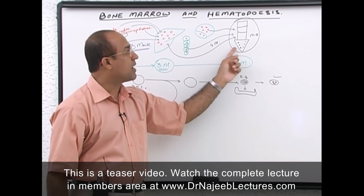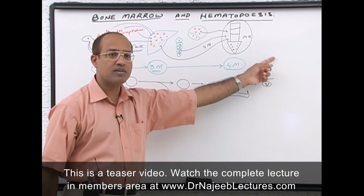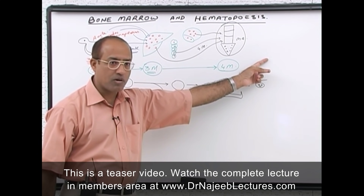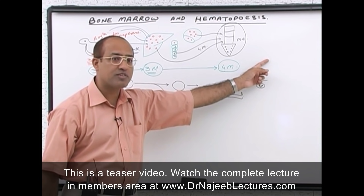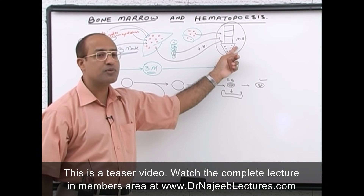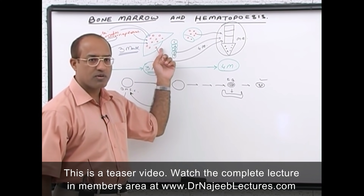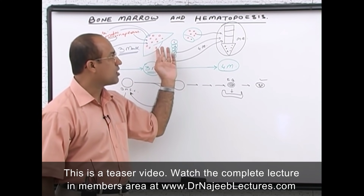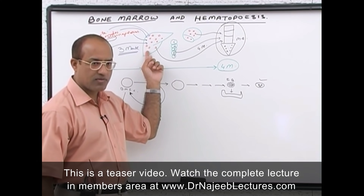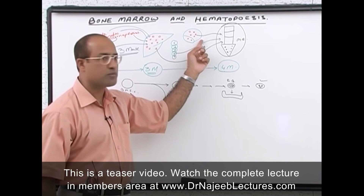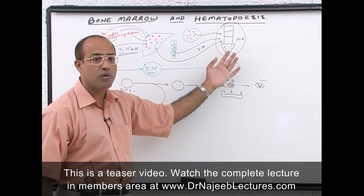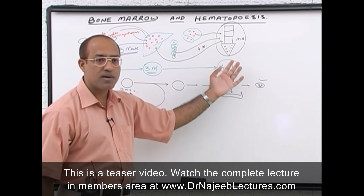By the time the baby is born — in a full-term baby — almost all hematopoiesis is going on in the bone marrow. Just before birth, the liver has stopped its hematopoietic function. By the time of birth, there is no significant hematopoiesis in the liver, no hematopoiesis in lymph nodes or spleen; all hematopoiesis is going on in the newborn's bone marrow.